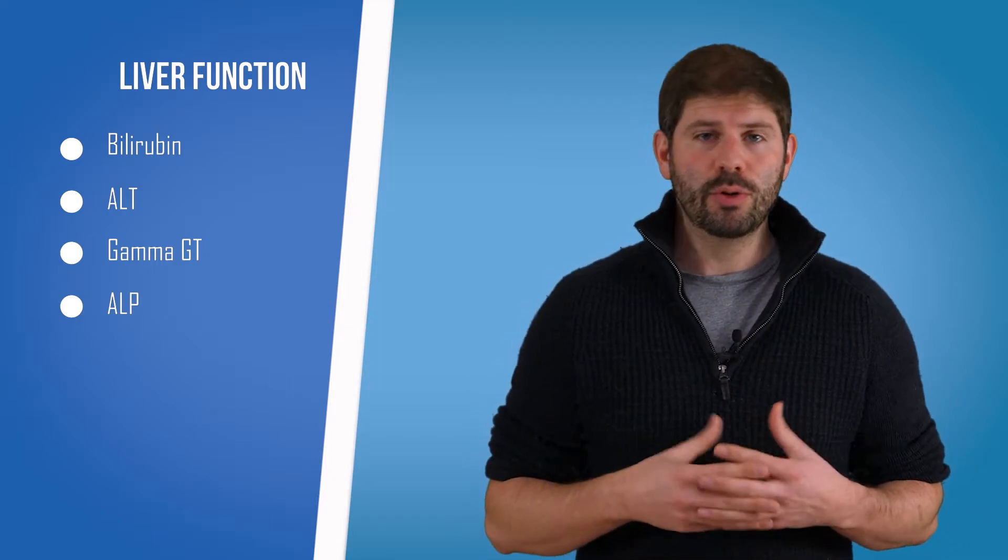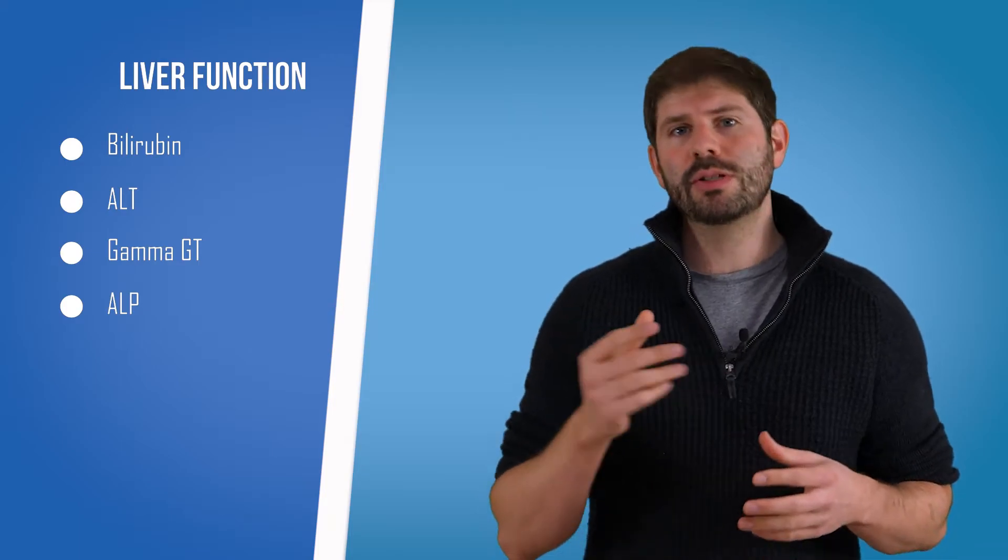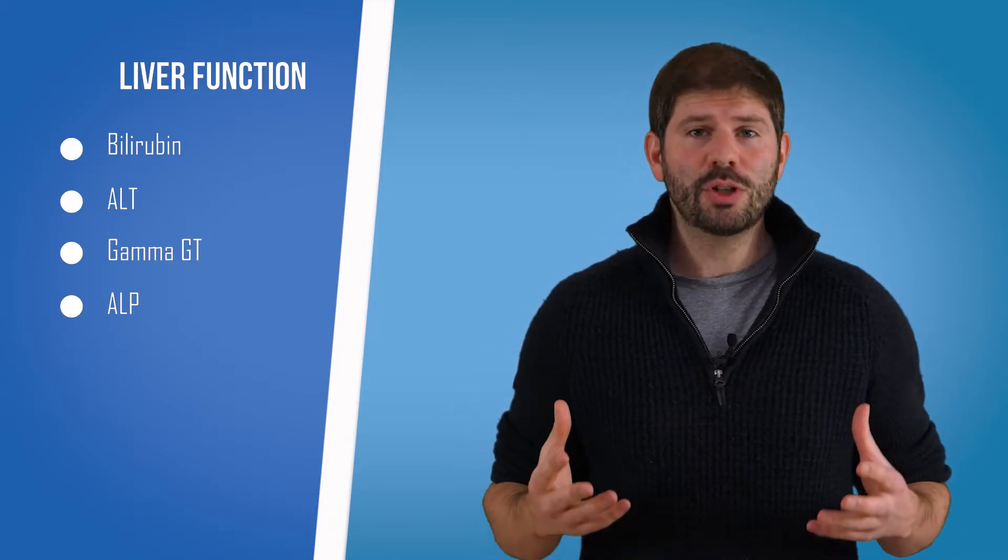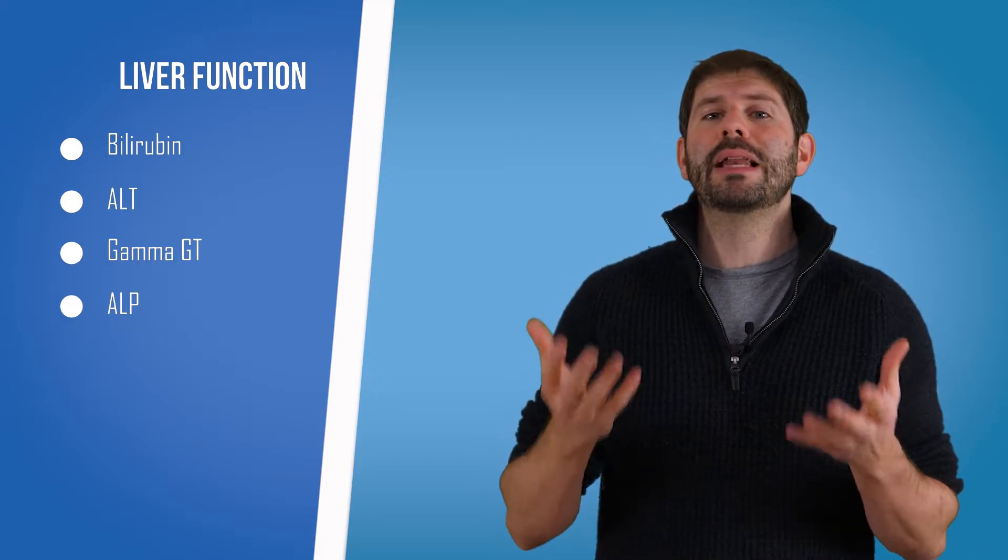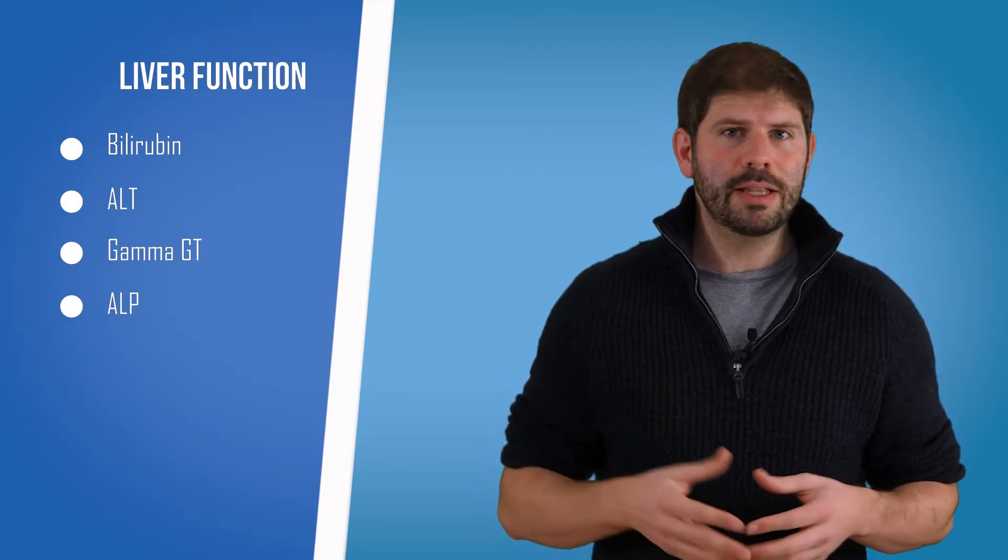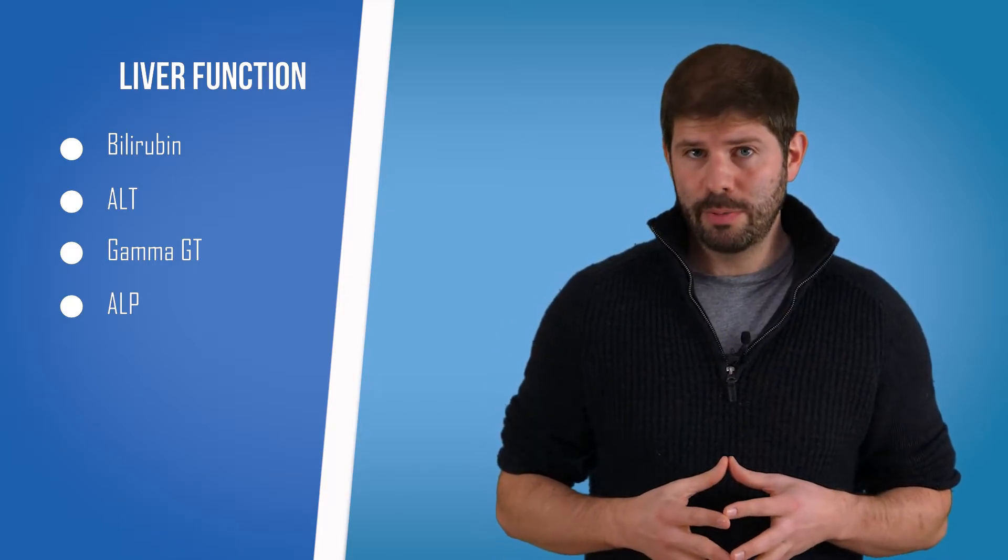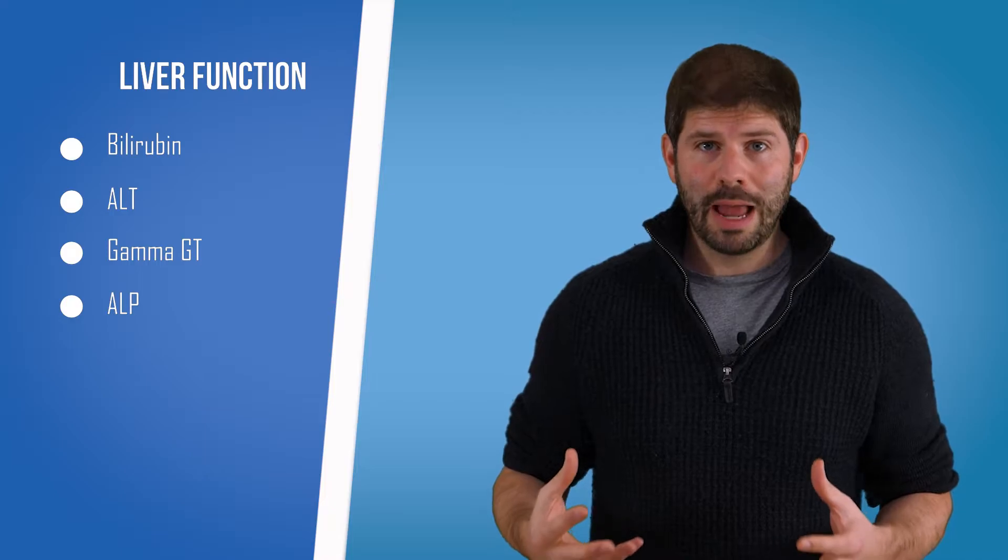Bilirubin is a breakdown product from your red blood cells after they've been processed through the liver. There are two types of bilirubin—we're not going to go into too much detail here—but if your bilirubin levels go up, it could mean that you have some kind of anemia where your red blood cells are breaking down a lot, but it could also mean that you have problems with your gallbladder.